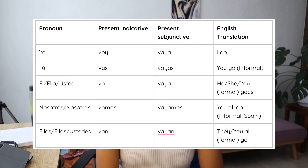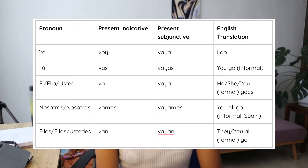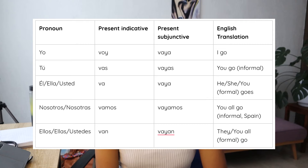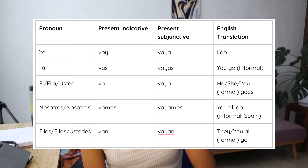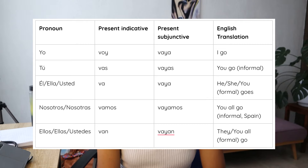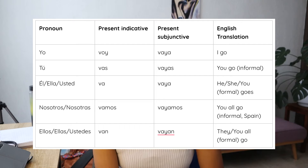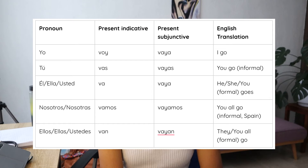Specifically with the verb 'to go,' let's look at the conjugation table in both indicative and subjunctive mood. Present indicative vs. subjunctive: yo voy / yo vaya; tú vas / vayas; él, ella va / él, ella vaya; nosotros vamos / nosotros vayamos; ustedes, ellos van / ustedes, ellos vayan. The translation in English, as you can see, is the same. Let's practice with other examples.